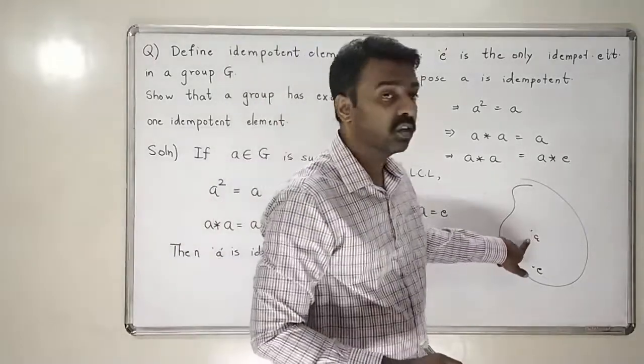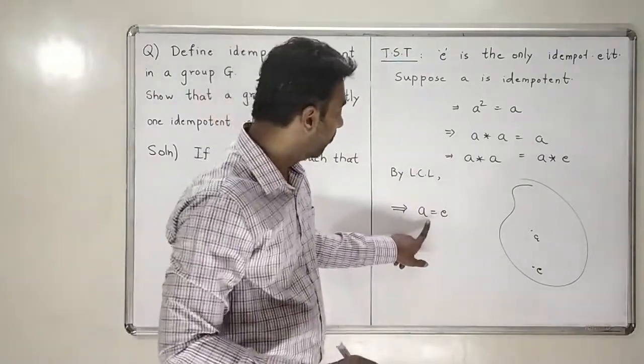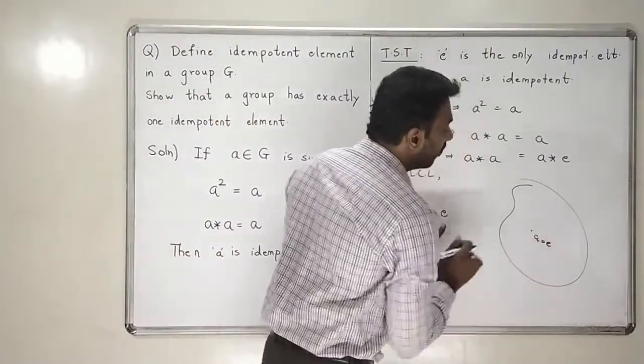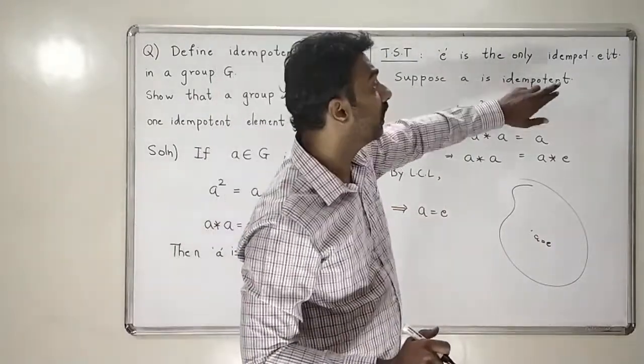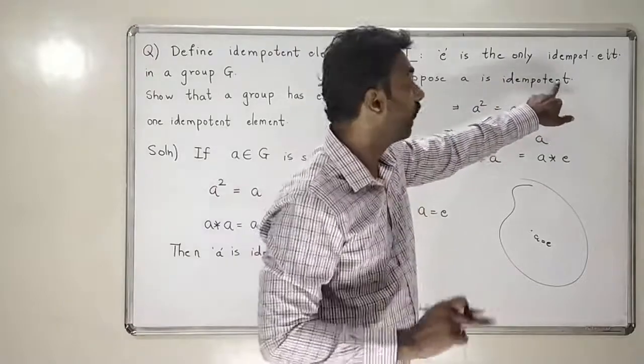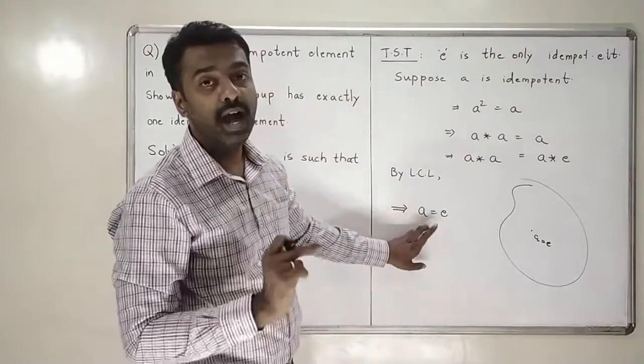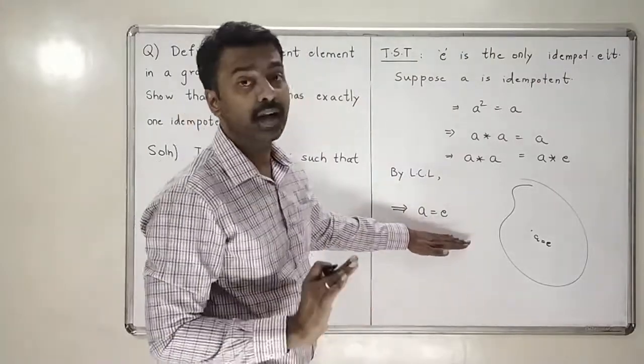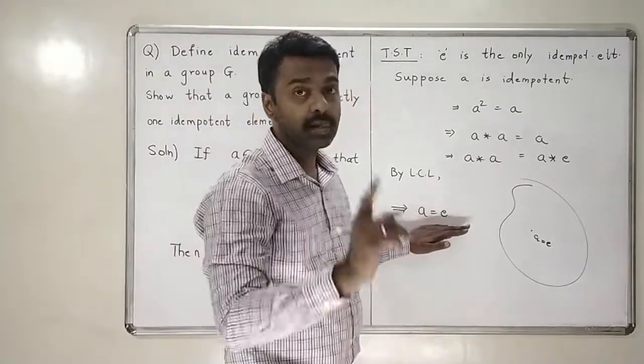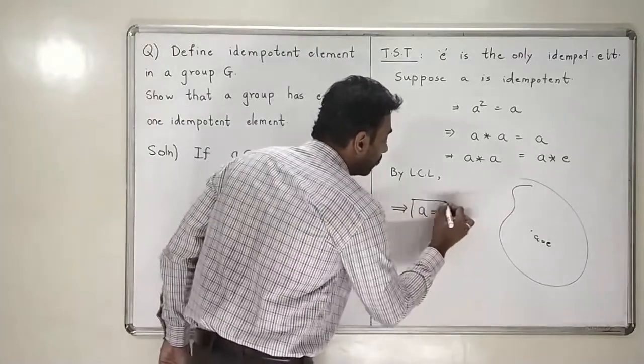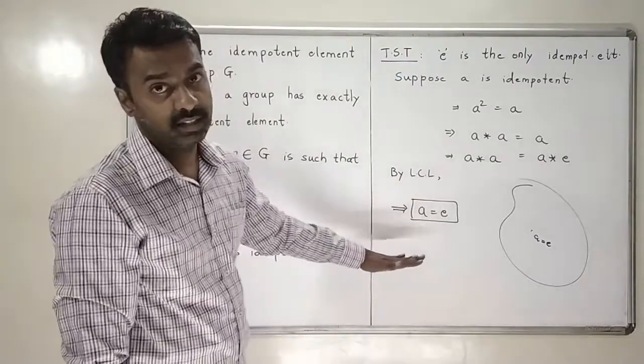So, this a that I was thinking was an idempotent element, actually, after my calculation, it turns out to be that that a is nothing but equal to the identity. Means, what have I proved in this part? I have proved that if suppose you find some element in the group who is idempotent, eventually that element turns up to be the identity element. So, how many idempotent elements does a group have? In that case, the group will have exactly one idempotent element and who is that idempotent element? It is identity. So, this finishes this exercise.